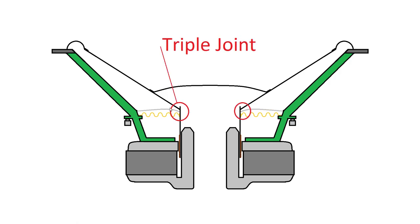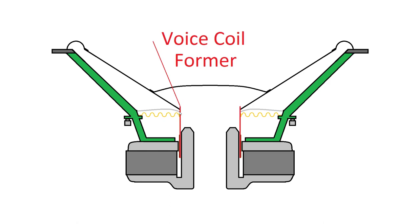This part right here is called the triple joint. It's where the cone, the next part, which is the voice coil former, and the spider all come together.